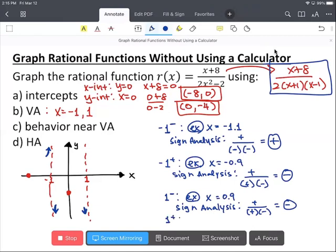Lastly, one from the right, you can let x equal 1.1. And use the sign analysis. Then the numerator part is positive. Denominator 1.1 plus one is positive. 1.1 minus one is also positive because 1.1 is bigger than one, right? And when we multiply them, we get a positive value. So as x approaches one from the right, y approaches positive infinity.